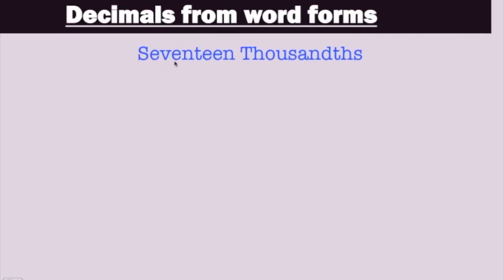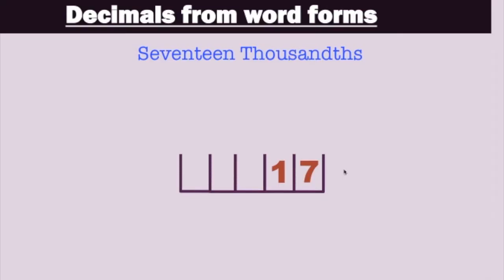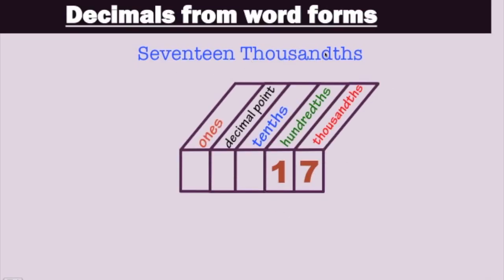How about 17 thousandths? There's no whole number and no word AND, so we start by writing the number 17. We just have to make sure that 17 has the last place value in the thousandths place. The seven must be under the thousandths place, so we place the decimal point and fill in the ones place with zero and the tenths place with a zero placeholder. As a decimal, 17 thousandths is 0.017 — the number 17 is there, and the last place value is the thousandths place.